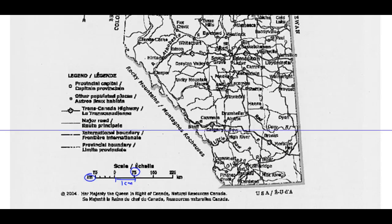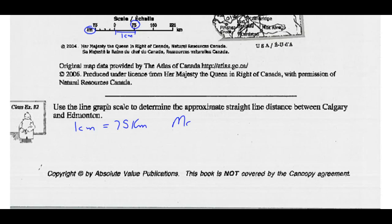We want to determine the approximate straight-line distance between Calgary and Edmonton. Find these two places on the map — here's Edmonton, here's Calgary. Use your ruler and measure that straight-line distance. The map distance as a straight line looks to be about 3.6 centimeters when I measure it.